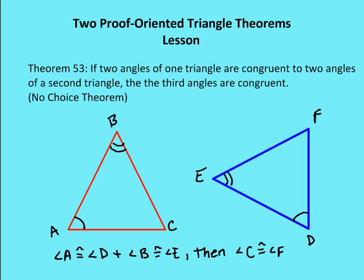Theorem 53 says if two angles of one triangle are congruent to two angles of a second triangle, the third angles are congruent. That's the no-choice theorem. We proved in the prior lesson that the sum of the measures of all the angles in a triangle equal 180 degrees.